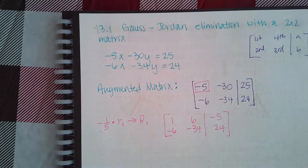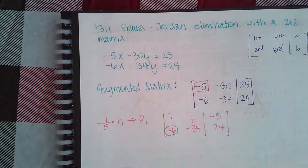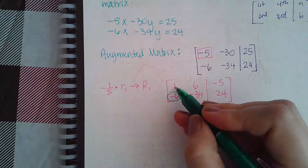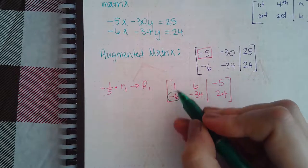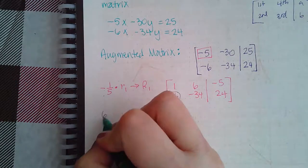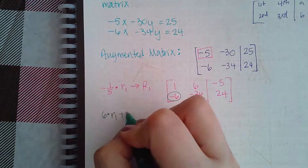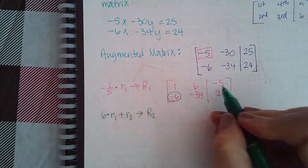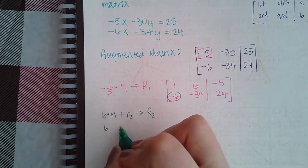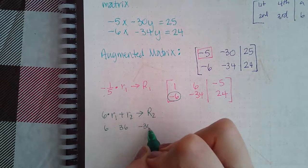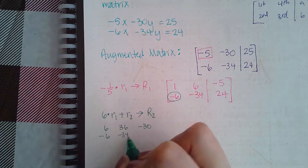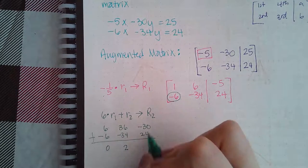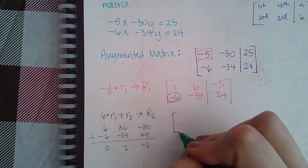Next, we're going to try to change this one to a 0. That has to go next. So, in order to change it to a 0, I turn that one into a positive 6, so that when I add them together, I get the 0. So, positive 6 times row 1 plus row 2 will give me my new row 2. So, then positive 6 times each of these guys, it's going to be positive 6, positive 36, and negative 30. Row 2 goes directly underneath. And if I combine these, I get 0, 2, and negative 6. So, that's going to replace my row 2.